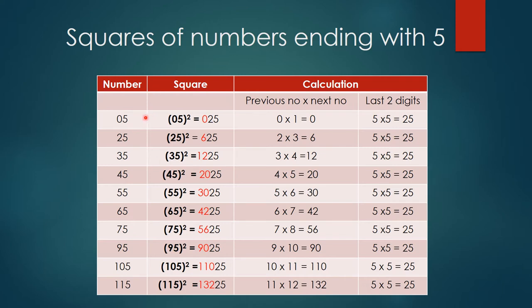Now the squares of these numbers, this is the final answer I have written. 5 squared is 25, 25 squared is 625, and 35 and so on. Now how to get this number instantly? First of all, last two digits.